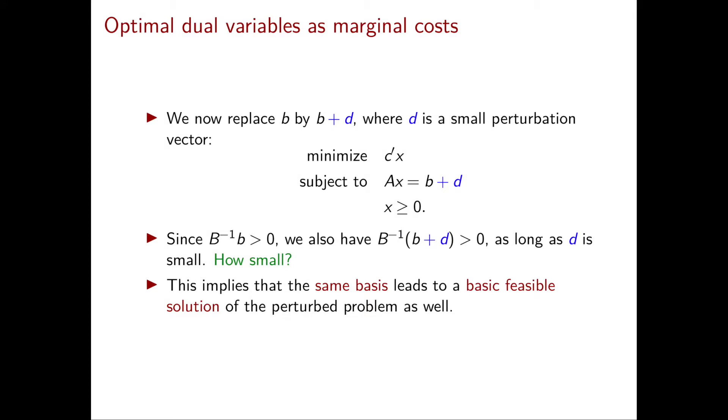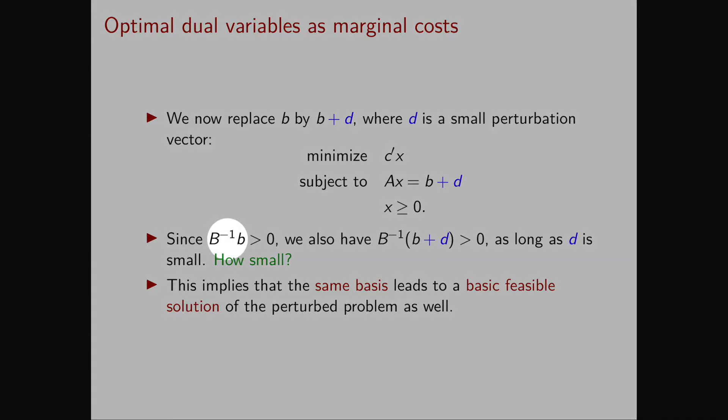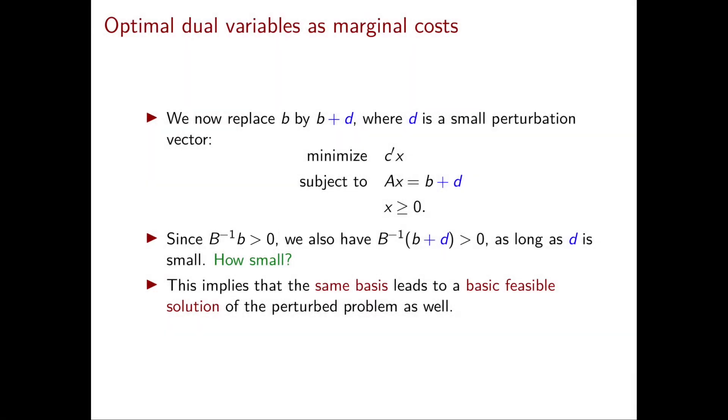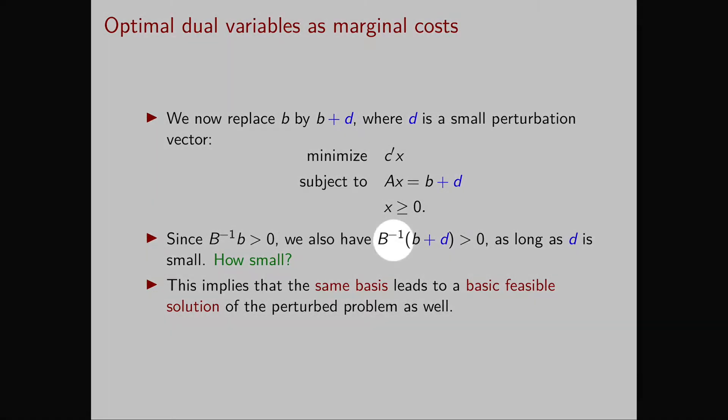We have just seen that the basic components of X star are strictly positive. If we now use the same basis for the new problem, we obtain that the vector of the basic components now is B inverse times B plus D.